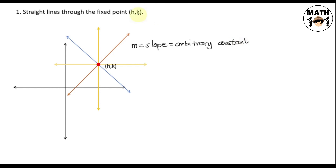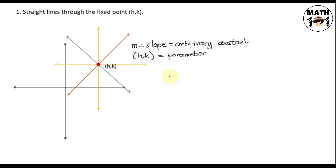Now, what about our consideration for the given fixed point h,k? Since it is a fixed point, that is a parameter — meaning we don't need to eliminate it. So our arbitrary constant for this problem is just one, meaning we differentiate only once. What equation will we use to represent these lines? We're given the slope and a point, so we'll use the point-slope form.